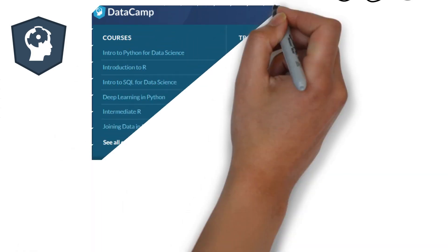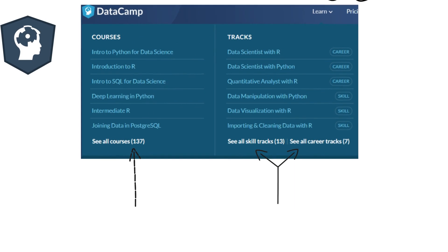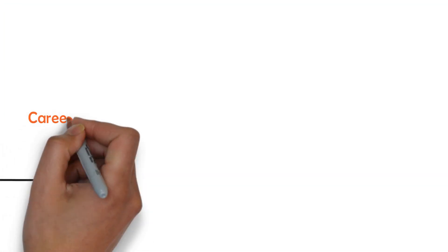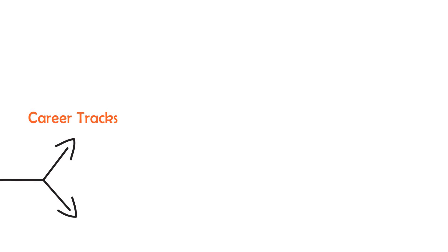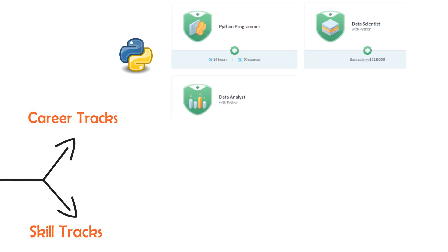DataCamp has a total of 137 courses related to the data science field. DataCamp courses are mainly divided into two tracks: career tracks and skill tracks. There are a total of 7 career tracks as of now.